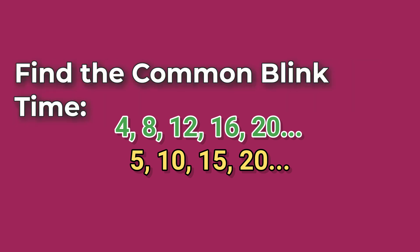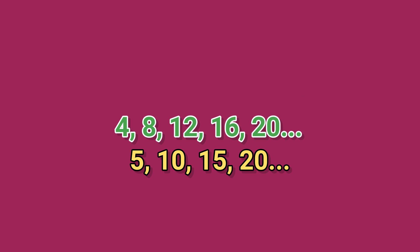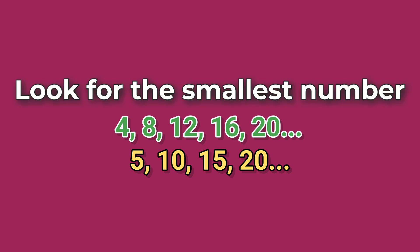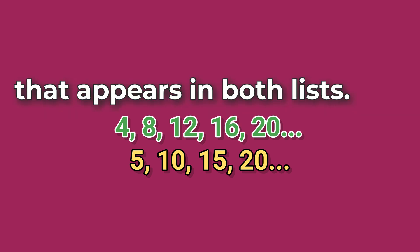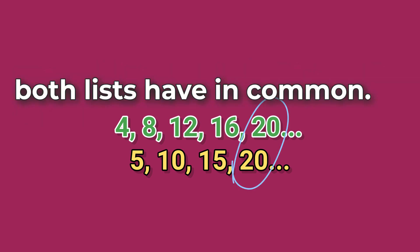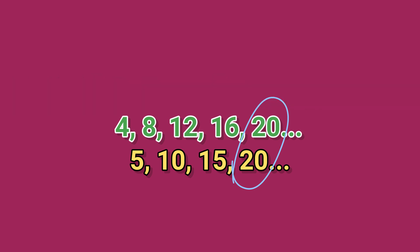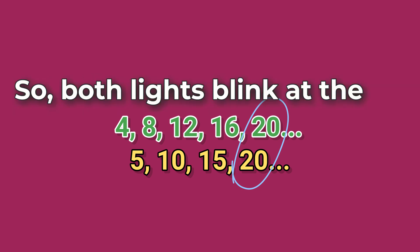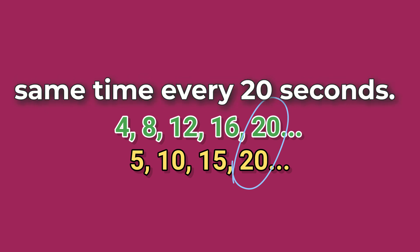Find the common blink time. Look for the smallest number that appears in both lists. 20 seconds is the first time both lists have in common. So both lights blink at the same time every 20 seconds.